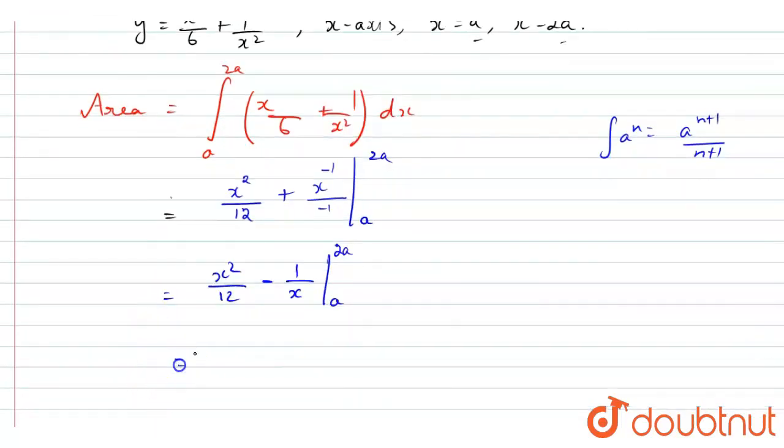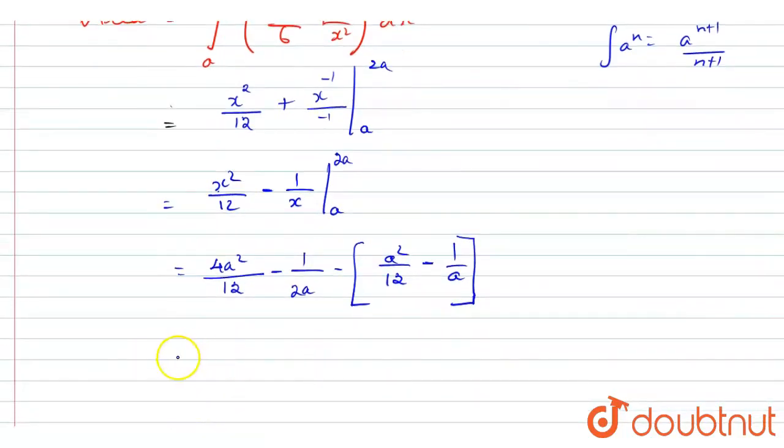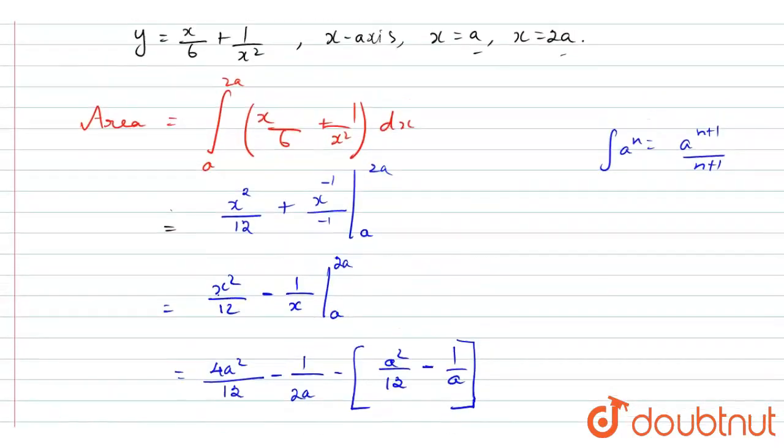Now I'm going to substitute the range values. That means 4a square divided by 12 minus 1 by 2a, and then minus a square by 12 minus 1 by a. If we solve this, we will finally get a square divided by 4 plus 1 by 2a. So I'm going to keep it as equation number 1. This is the area.